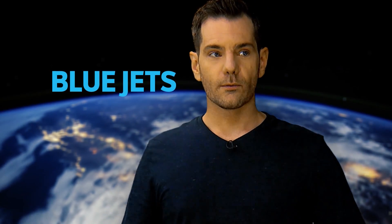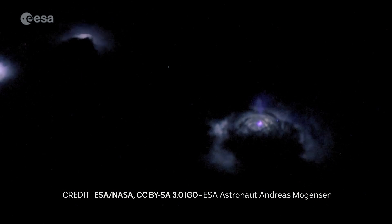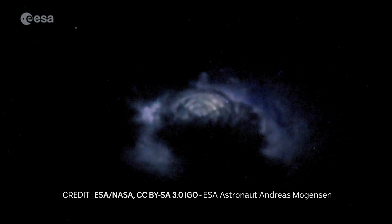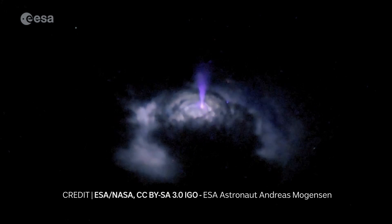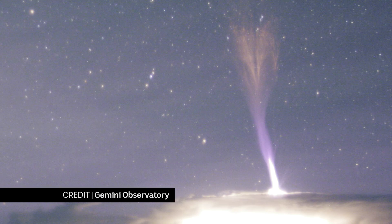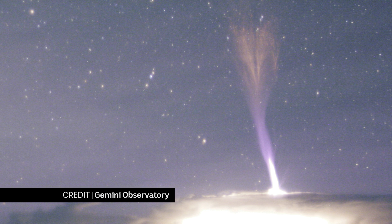Blue jets are blue. And blue jets stands for blue jets. No acronym here. They shoot up from the top of storm clouds in the shape of narrow blue cones. And they are fast. They reach speeds of hundreds of kilometers per second. And as they shoot up, they fan out and disappear.